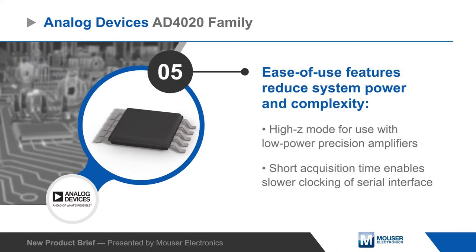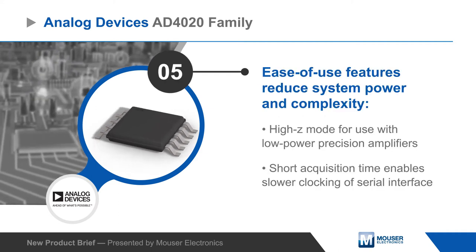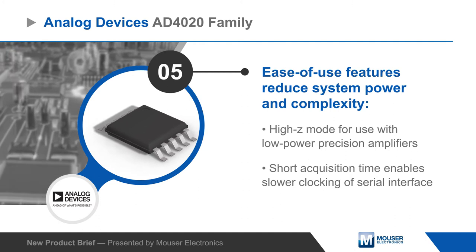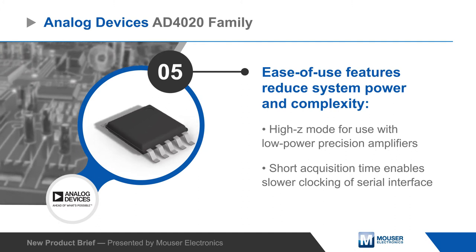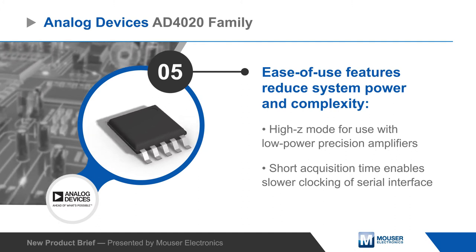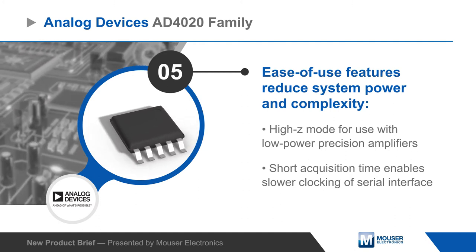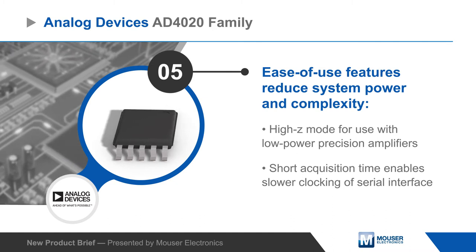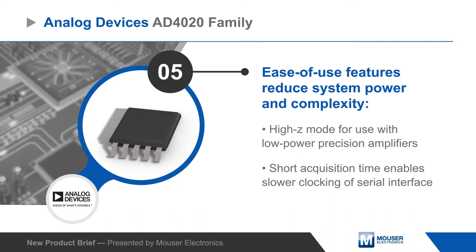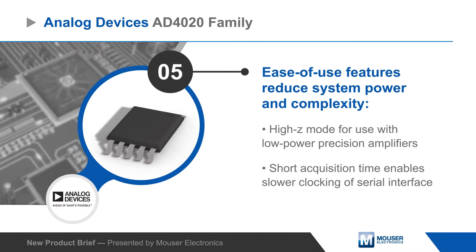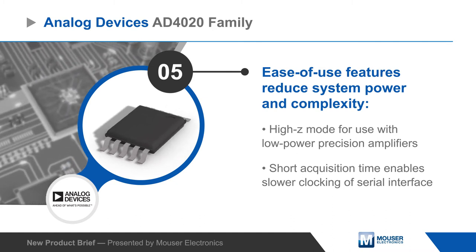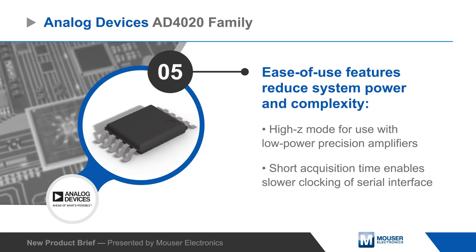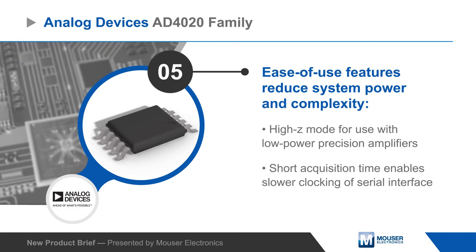The ADCs include a number of features that further simplify the signal chain and reduce system power consumption, including a high-Z mode that enables driving inputs with low-power precision amplifiers, a 350 ns conversion time that allows for slower clocking of the serial interface, and the ability to daisy-chain multiple ADCs.